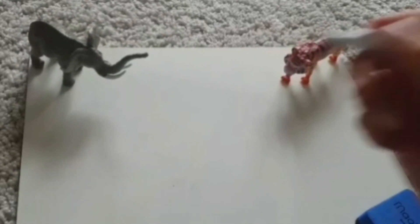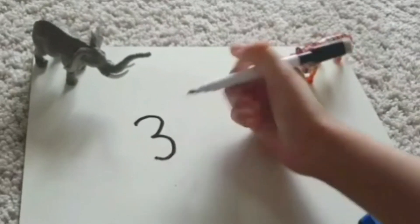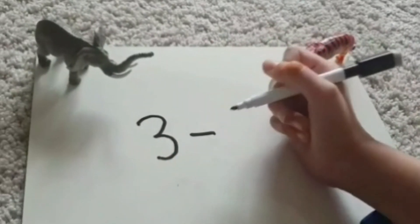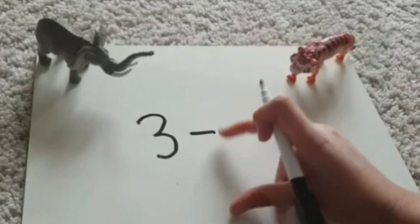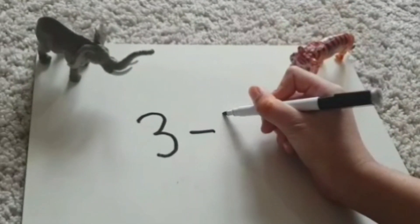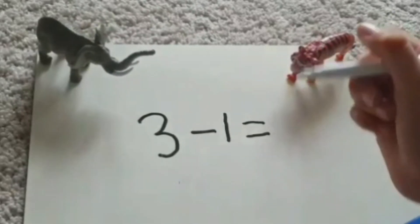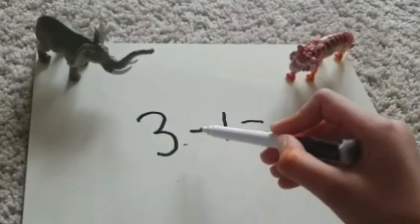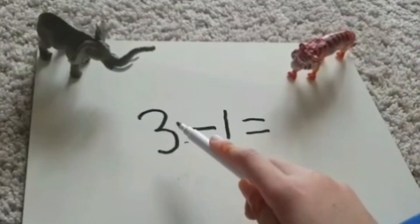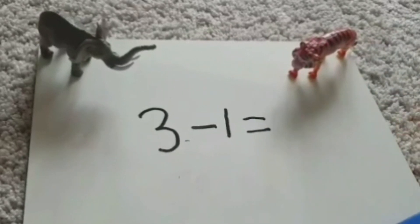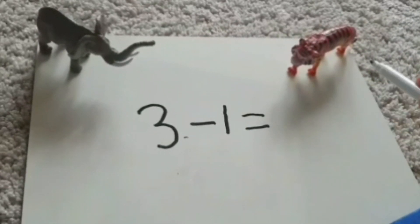For example, three minus or take away one equals. So that's the take away sign. And equals means, so you have to take away one and then what does that make? So you have to take away one from three and what does that make?